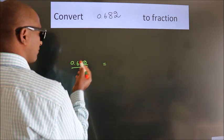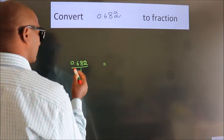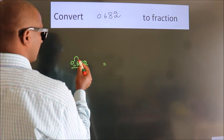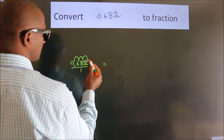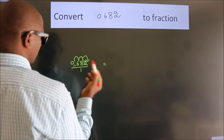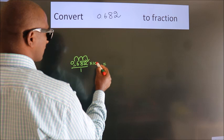To convert this to fraction, we have to move this decimal after 1, 2, 3 numbers. To move this decimal after 3 numbers, we have to multiply it with 1000.